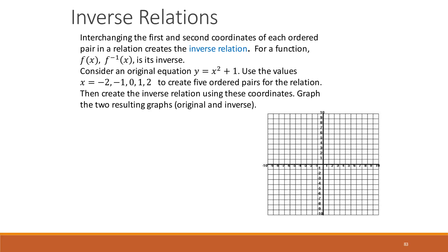For example, using the given example, we want to use x squared plus 1 and we're given these values to create five ordered pairs for the relation. Then we're going to graph it and graph the inverse. Our x values are negative 2, negative 1, 0, 1, and 2 for the original function.